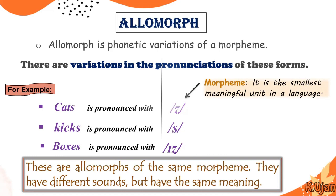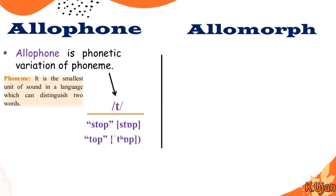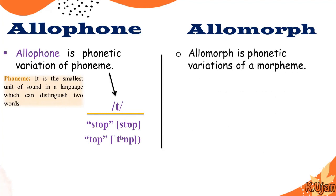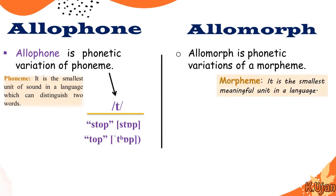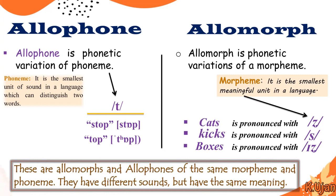To summarize the distinction: an allophone is a phonetic variation of a phoneme. The phoneme is the smallest unit of sound in a language — for example, /t/ is a phoneme and there are two ways to pronounce it, as in 'stop' and 'top'. On the other hand, an allomorph is a phonetic variation of a morpheme. A morpheme is the smallest meaningful unit in a language — as in 'cats', 'kicks', and 'boxes', where the plural endings /s/ and /ɪz/ are allomorphs of the same morpheme.